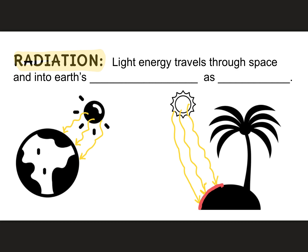Let's go back to the top and fill in the blanks. Light energy travels through space and into Earth's atmosphere as waves.